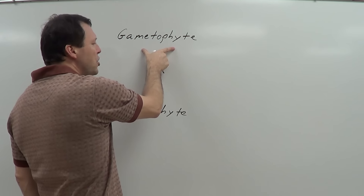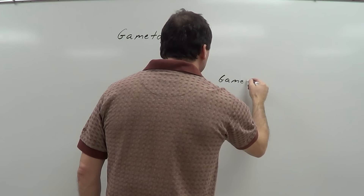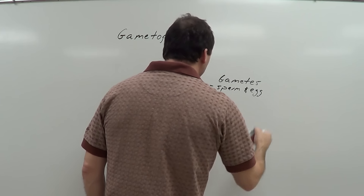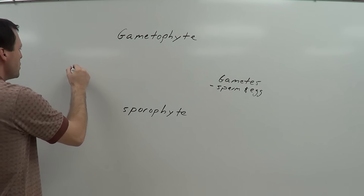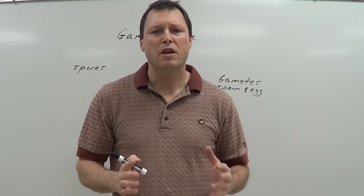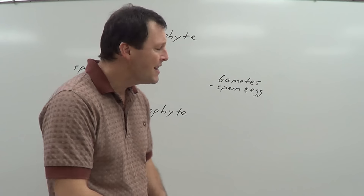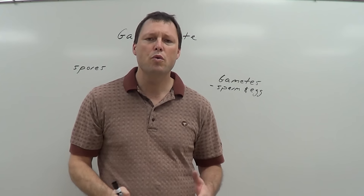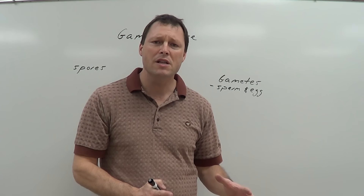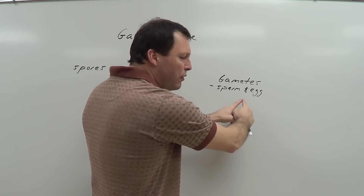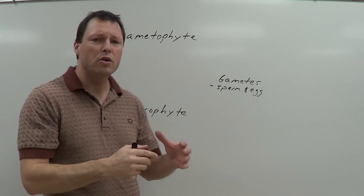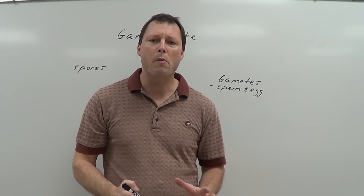The gametophyte is going to produce gametes — sperm and egg. The sporophyte is going to produce spores. Now spores are tough cells; a spore is a single cell that grows into a brand new organism all by itself. That's different from a sperm or an egg. A sperm cannot grow into a new organism alone, and with only a few exceptions, an egg cannot either. A sperm and egg have to fuse together to become a new organism, whereas a spore grows into one all by itself.